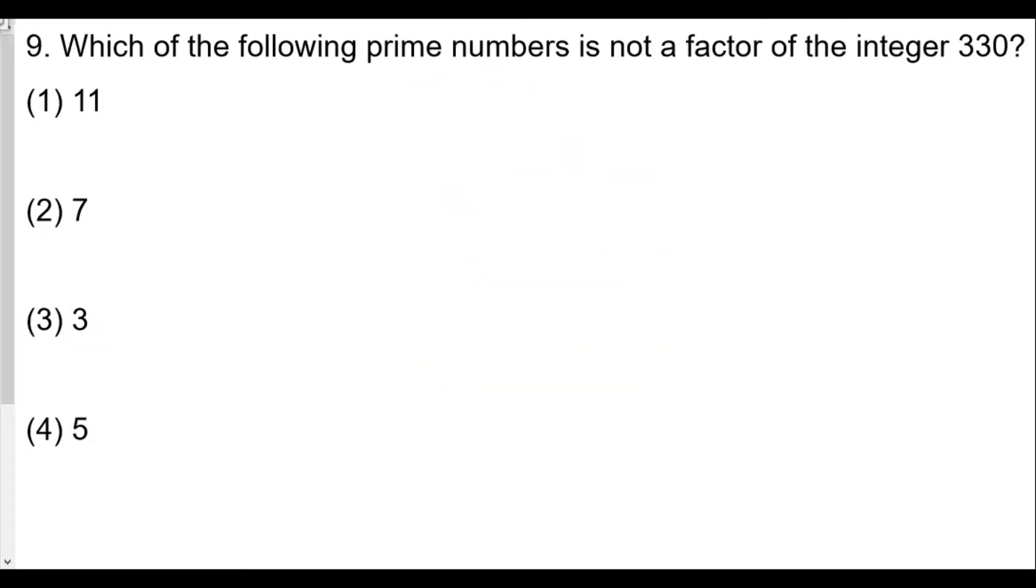Which of the following prime numbers is not a factor of the integer 330? Here we do something called a factor tree, the prime factorization. We'll pick two numbers that multiply to 330. Well, 3 goes into 330, 110 times. So 3 is a factor, so it can't be this one.